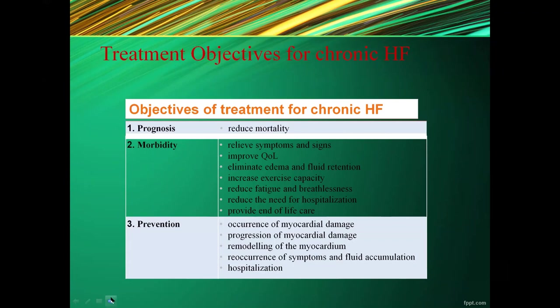Treatment objectives for chronic heart failure cover prognosis, morbidity, and prevention. For prognosis, we aim to reduce mortality. For morbidity, we relieve symptoms and signs, improve quality of life, eliminate edema and fluid retention, increase exercise capacity, reduce fatigue and breathlessness, reduce hospitalization, and provide end-of-life care. For prevention, we try to prevent occurrence of myocardial damage, stop progression of damage, reverse myocardial remodeling, and prevent recurrence of symptoms, fluid accumulation, and hospitalization.